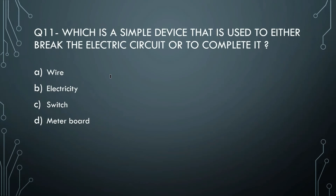Next question: which is a simple device used to either break an electric circuit or complete it? The options are wire, electricity, switch, or meter board. The right answer is switch. The switch is the key device - if the switch is on, the circuit is complete; if the switch is off, the electric circuit breaks.